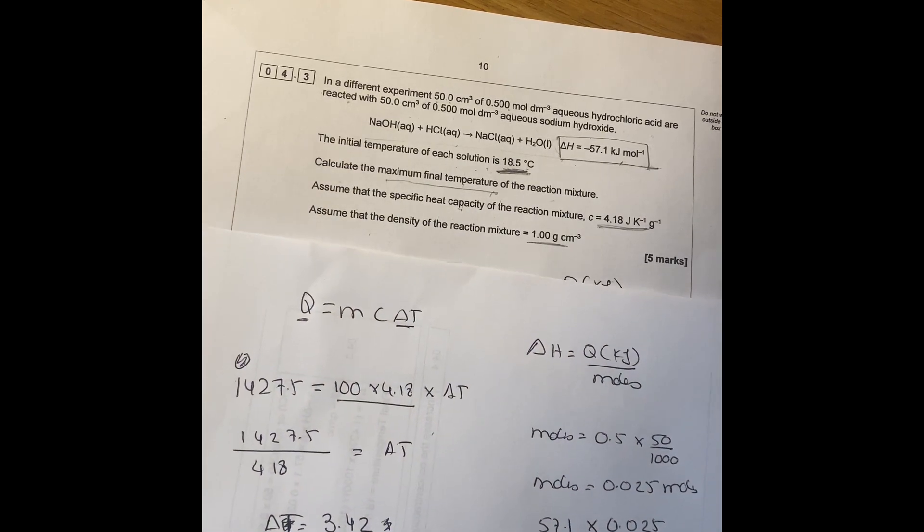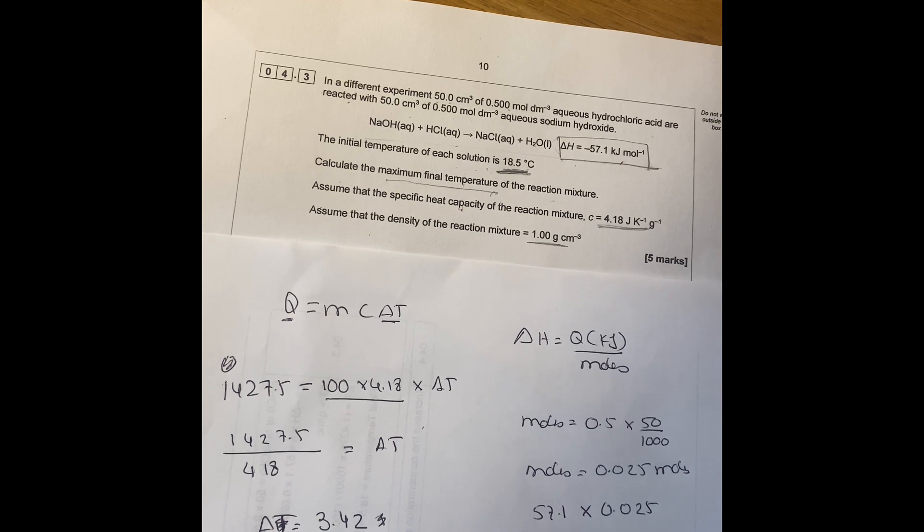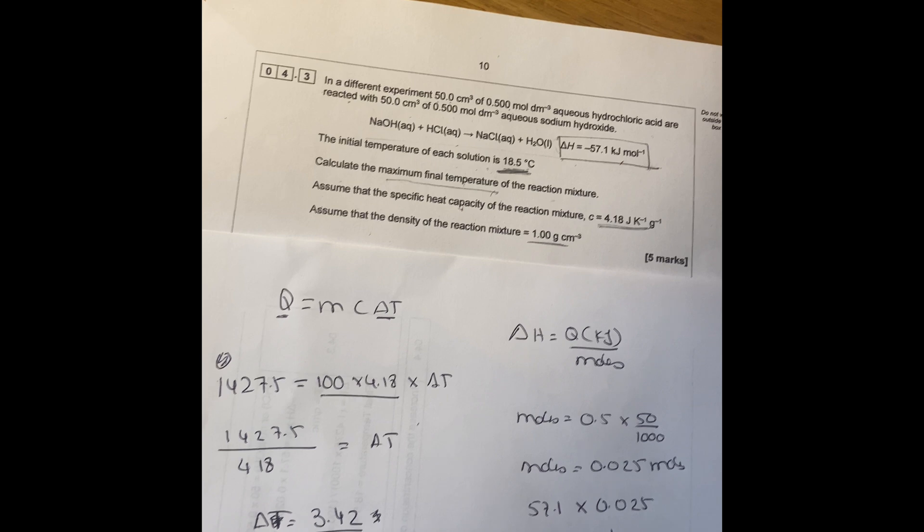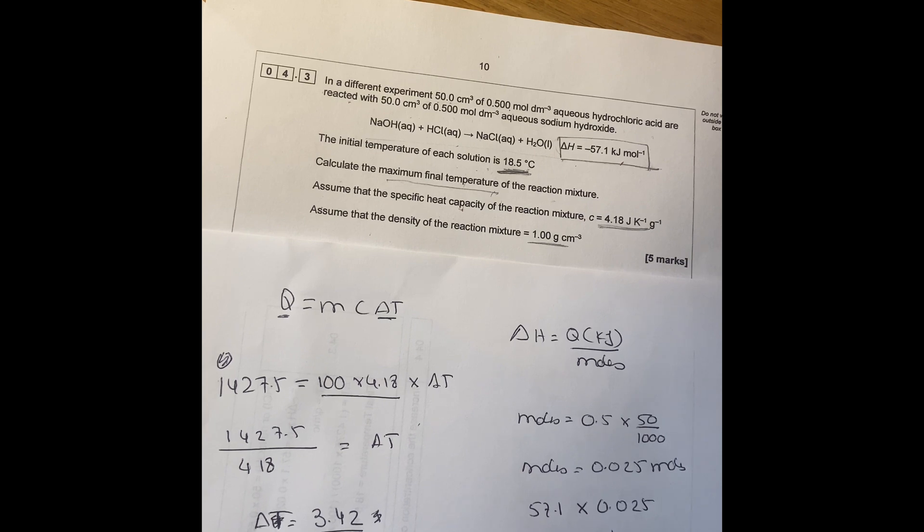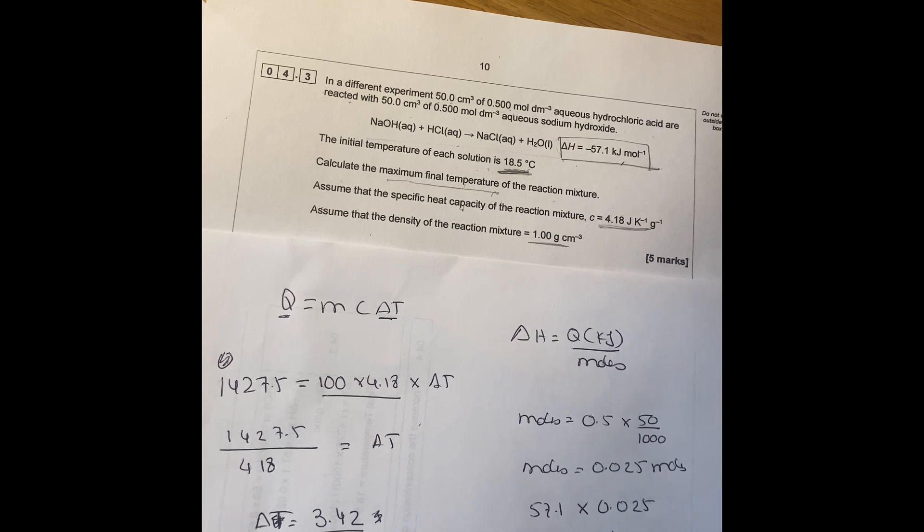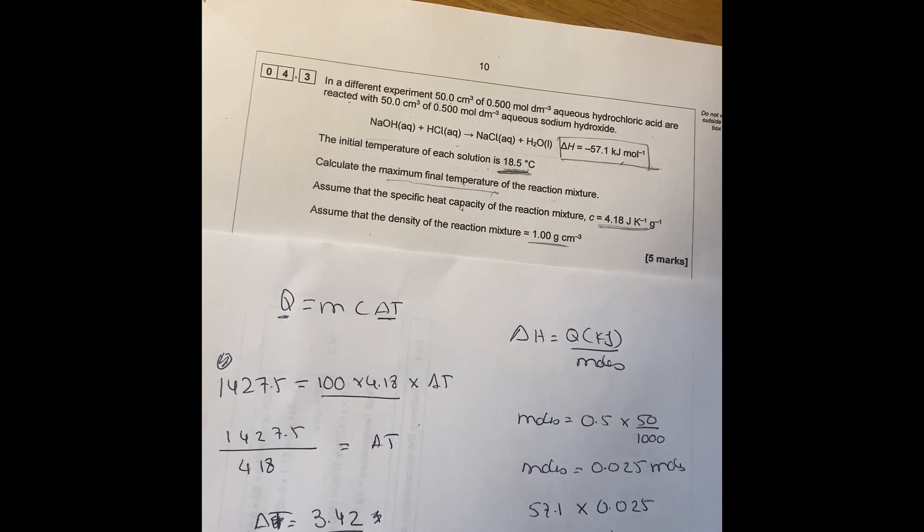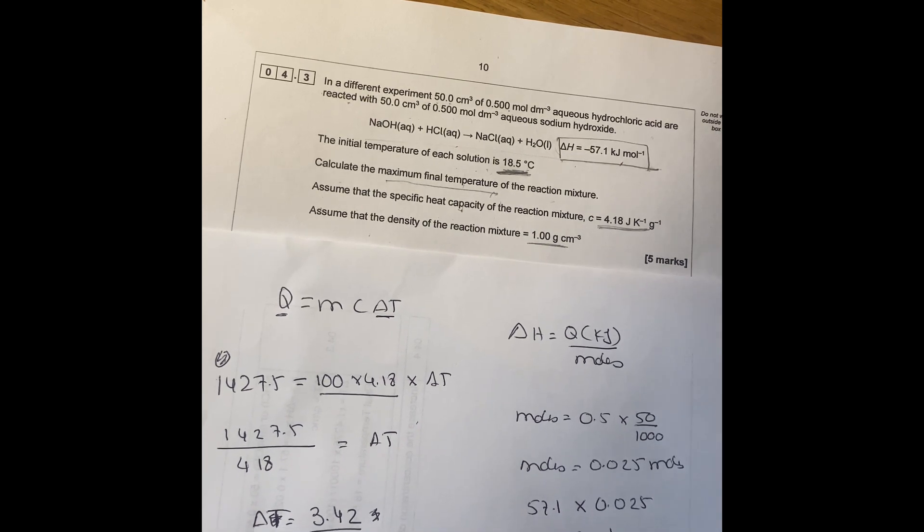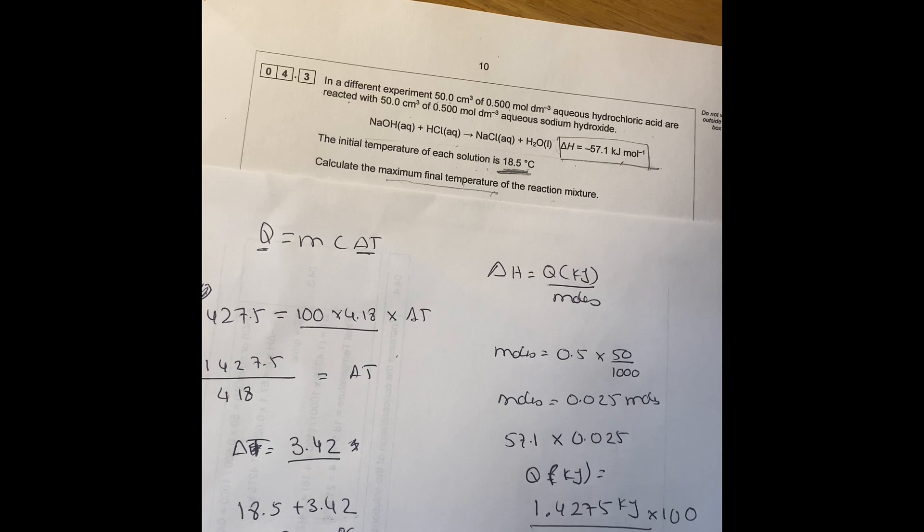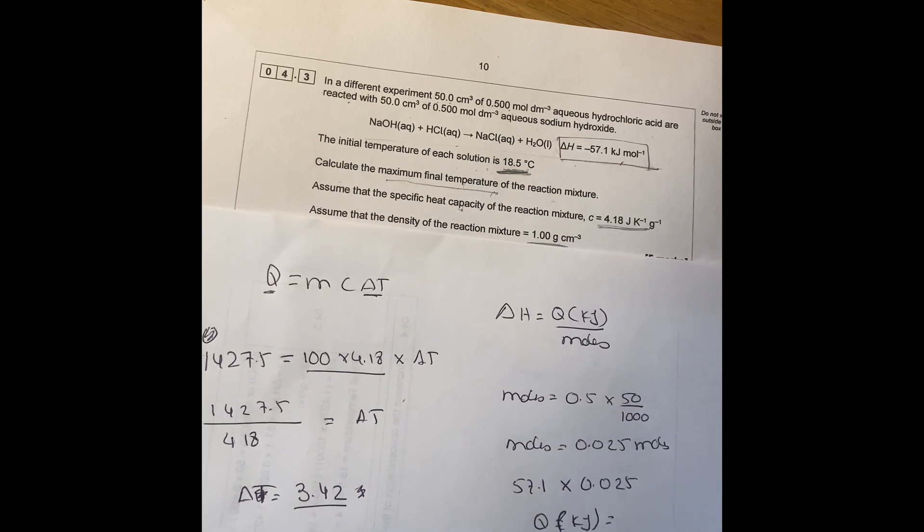I hope that it's helpful. I'm sorry I got a bit messed there but that's how you work out. Just to clarify one thing: there was an initial temperature of 18.5, a temperature change of 3.42, so that's why you add them together to know the final temperature which is 21.9 degrees. I hope that was helpful for you to understand. Thank you. Bye-bye.